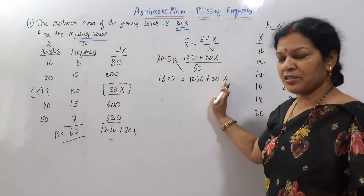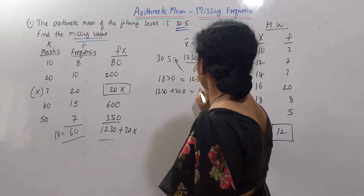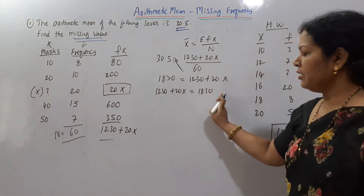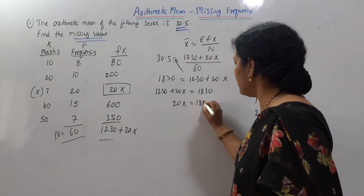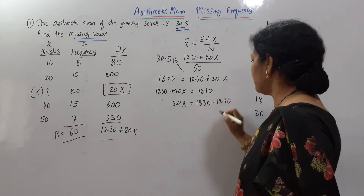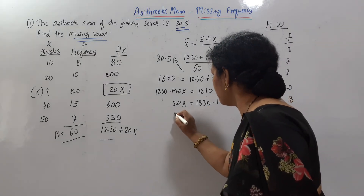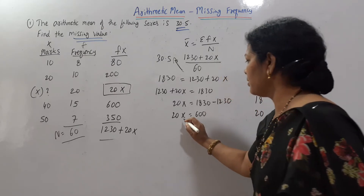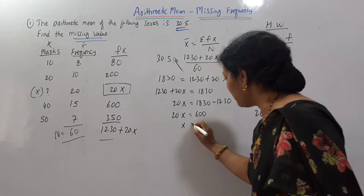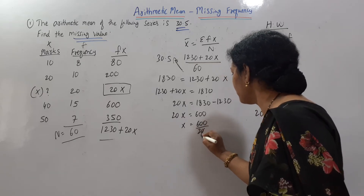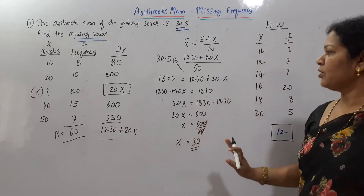We take 1230 to the left side, so: 20X = 1830 − 1230 = 600. Therefore X = 600 / 20 = 30. The missing value is 30. That is your answer.